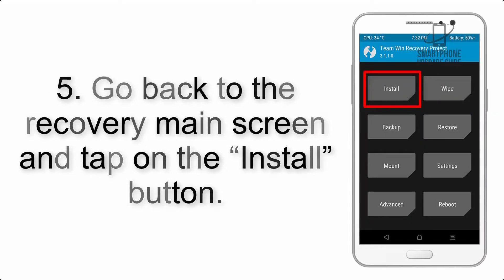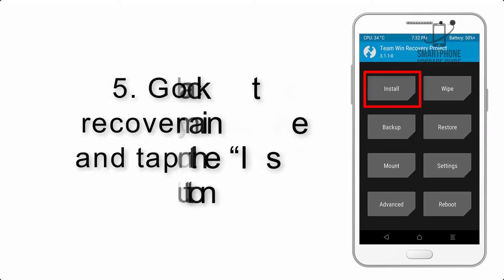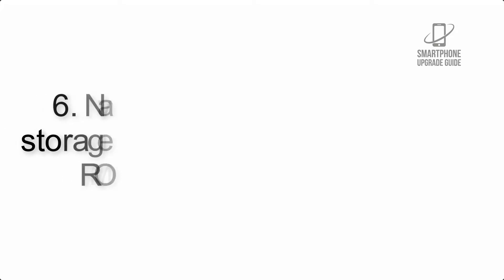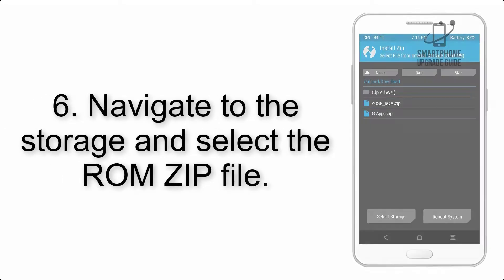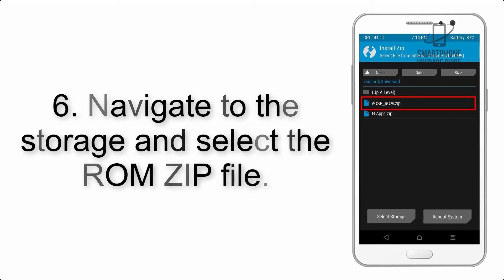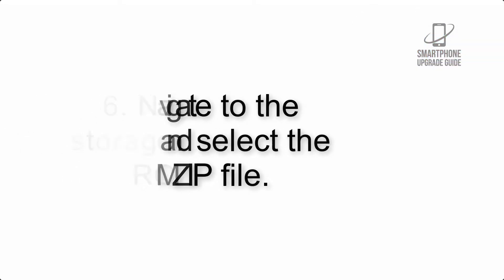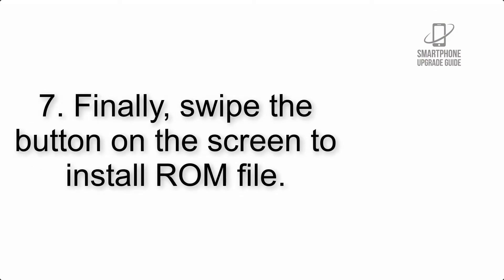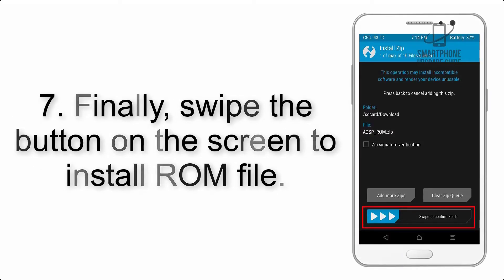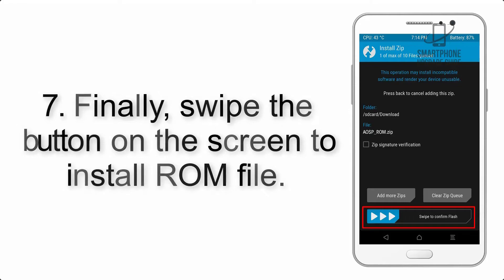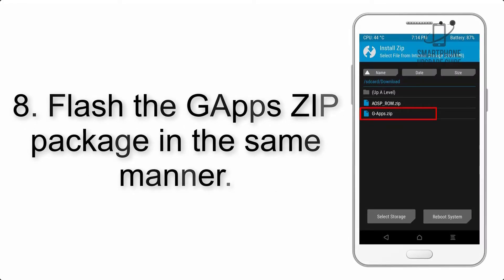Step 5: Go back to the recovery main screen and tap on the Install button. Step 6: Navigate to the storage and select the ROM zip file. Step 7: Finally, swipe the button on the screen to install the ROM file.